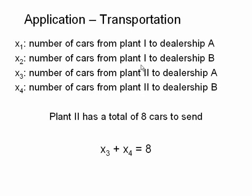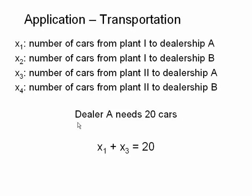Where people run into trouble is if they don't write this stuff down — there's just too much to keep track of. I won't consider a problem correct unless I see a description of the variables. Dealer A needs 20 cars, and he gets cars through x1 and x3, so x1 plus x3 equals 20. Dealer B needs 16 cars, and x2 and x4 relate to dealership B, so x2 plus x4 equals 16.